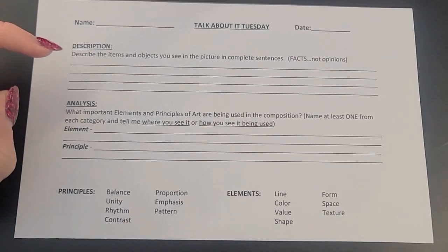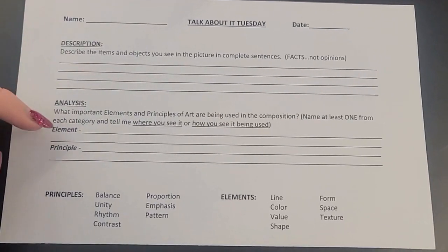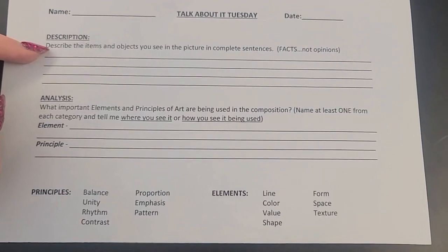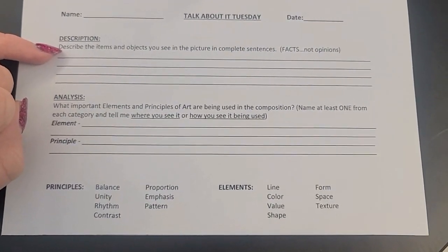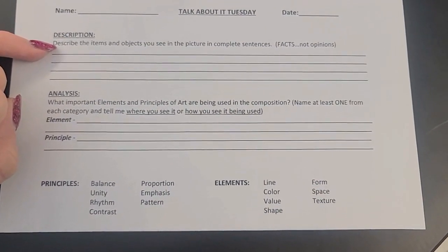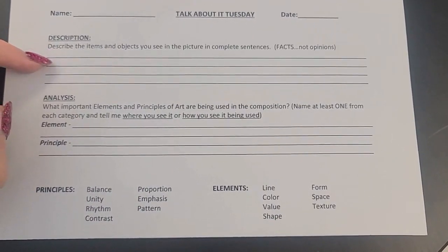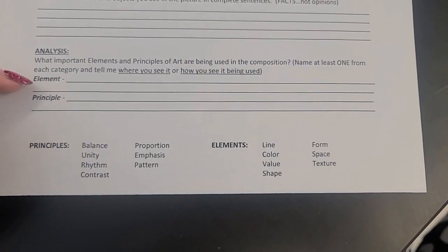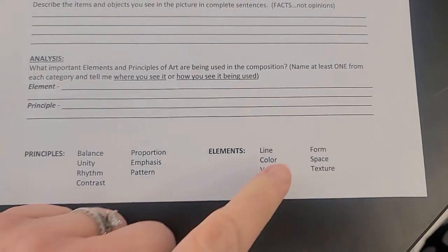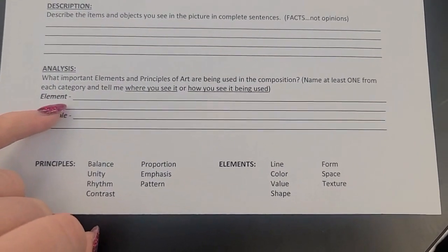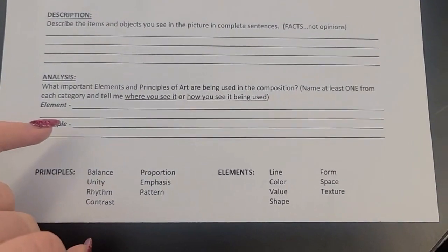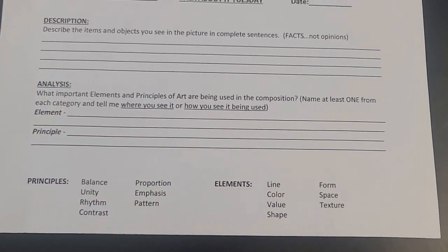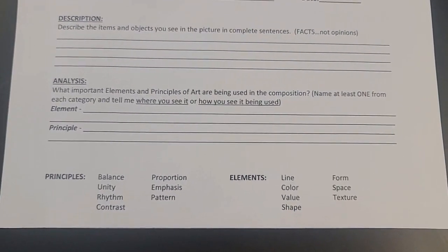First they are asked to describe the artwork and analyze it. For describing, we talk about sticking to facts not opinions — staying away from language like 'I like' or 'ugly' or 'pretty' — just the facts. For analysis, they need to identify one element and one principle in the artwork and explain exactly where or how they see it being used.